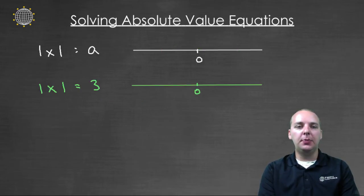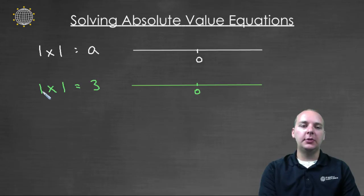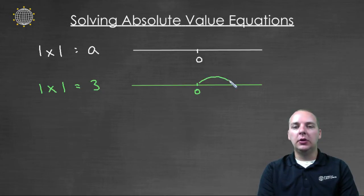Let's try a simple example and then we'll look at a more complicated example. If we have the absolute value of x equals three, then we're looking for any numbers whose absolute value would be three, or you could say what numbers are three units away from zero. You could go to the right three units or to the left three units.